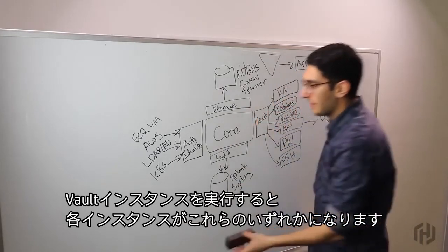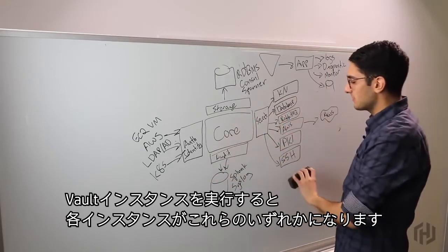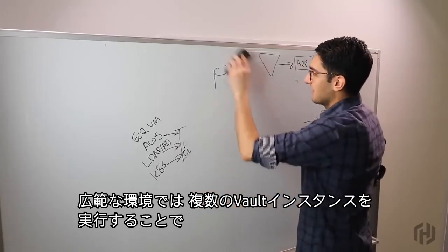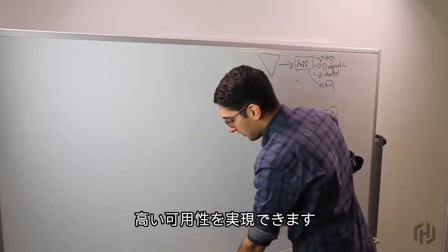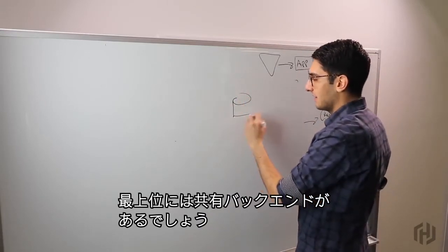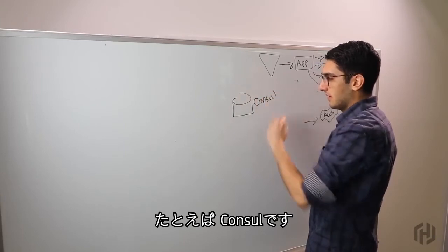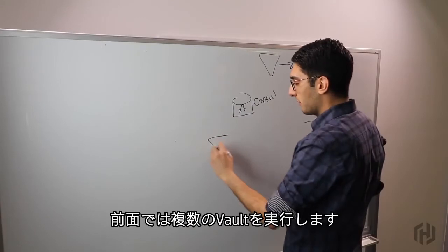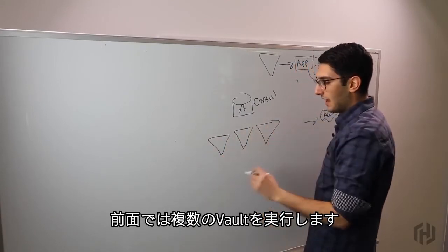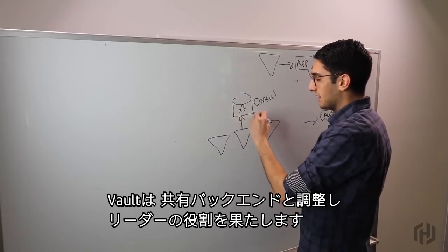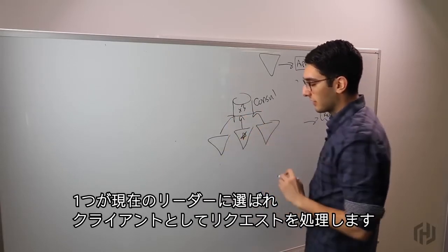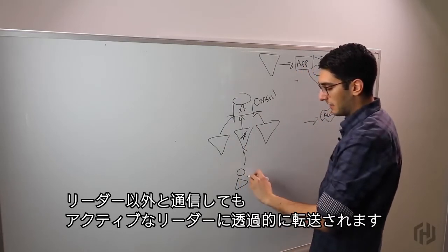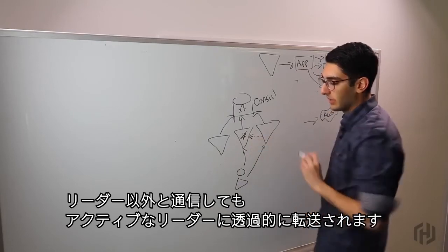As we talk about running a Vault instance, each instance of it is one of these. And then in a broader deployment, what this will look like is we run multiple Vault instances to provide high availability. At the highest level, we'd have a shared backend. For example, this might be Consul, which internally is three different servers, as an example, providing us HA. And then we will run multiple Vaults in front. And what Vault does is it will coordinate with the shared backend to perform leader election. So one of these might be elected our current leader. And so as a client, when we're making a request, we're talking to the leader. And even if we talk to a non-leader, we'll be transparently forwarded to the active leader.